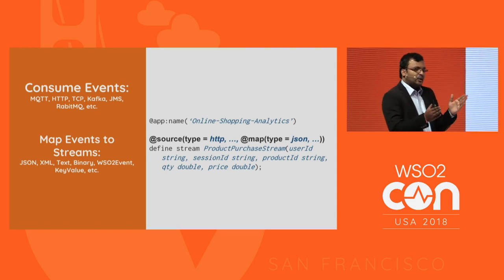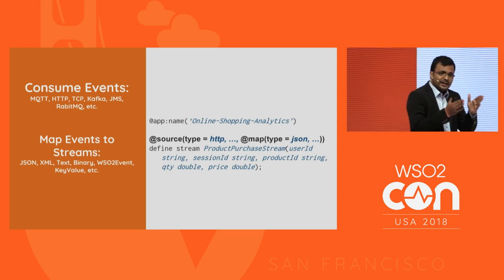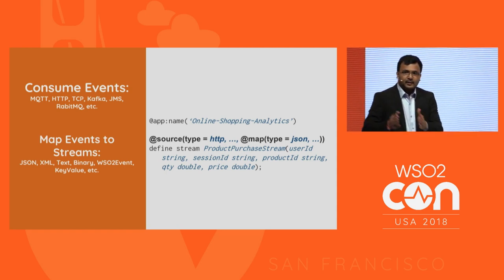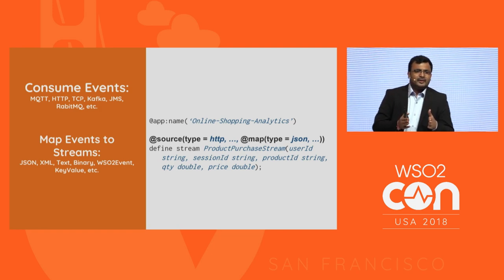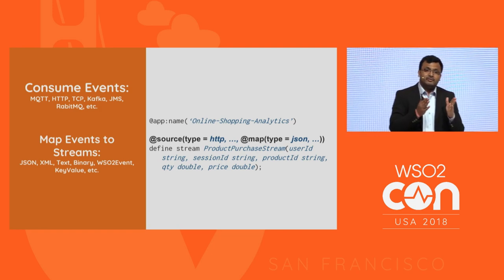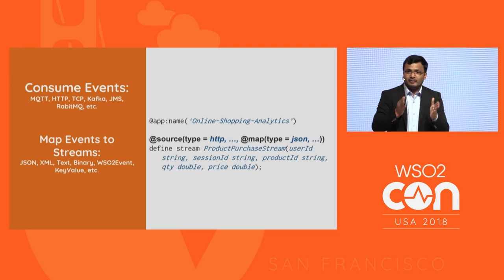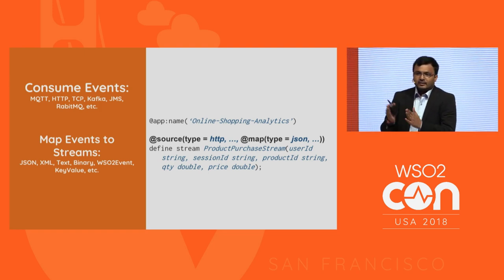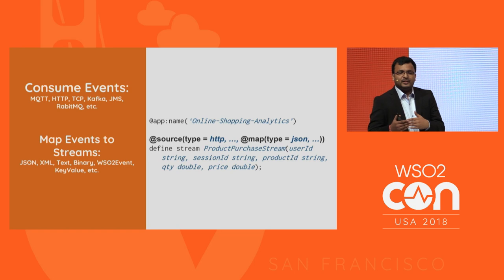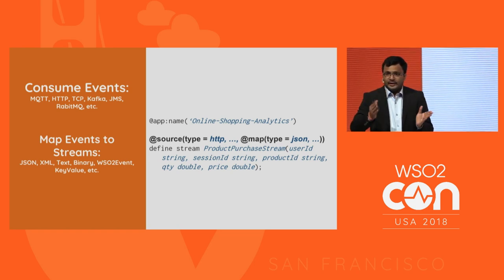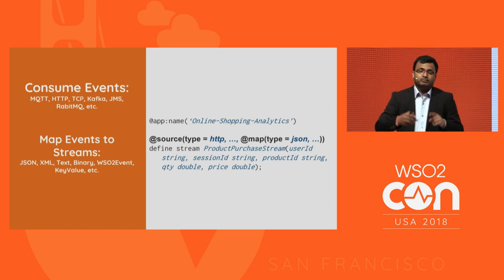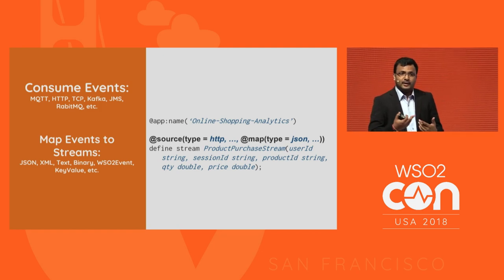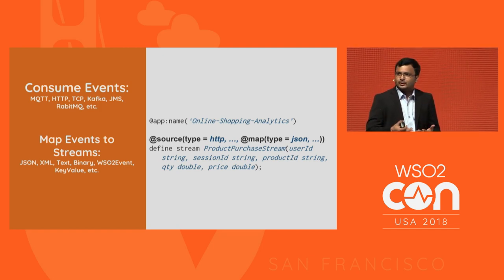There are two types of mappings available: default mapping and custom mapping. Default mapping means you send events in a predefined format we have already defined. Custom mapping means you have your own data format and provide a mapping at the stream processor level — for JSON, you provide a JSON path mapping; for XML, it's an XPath or similar expression.